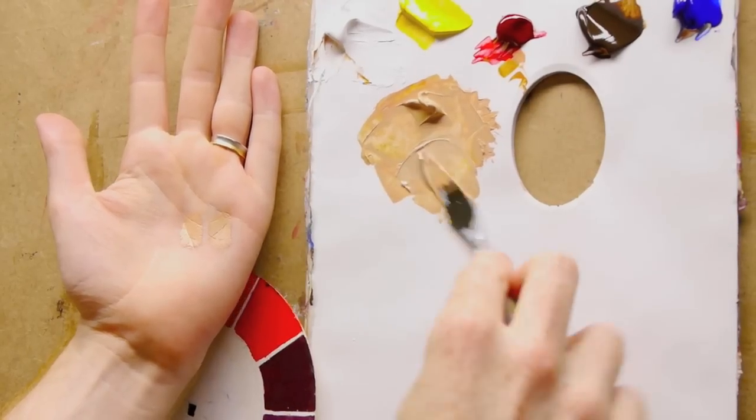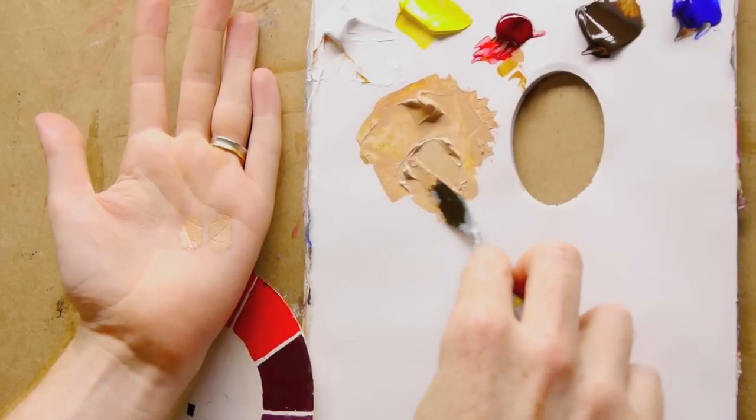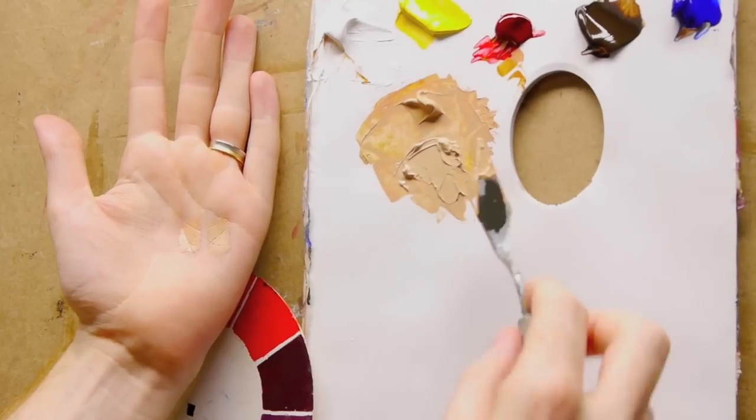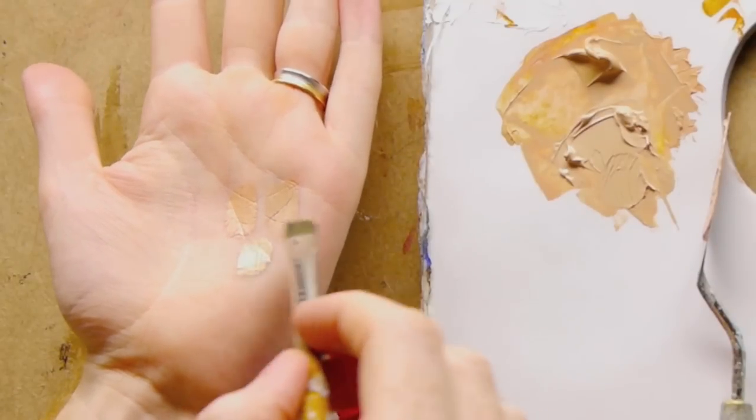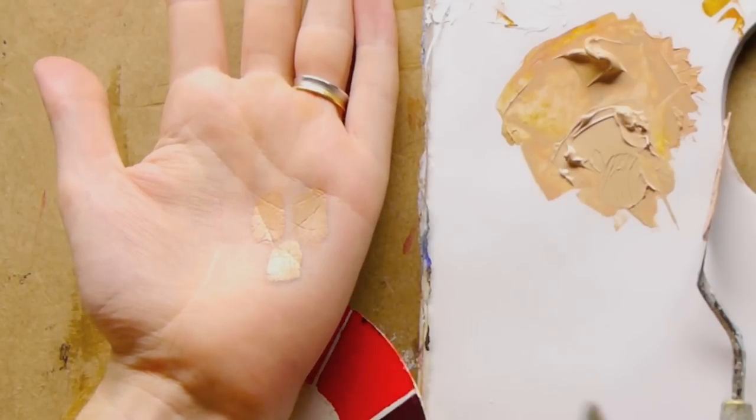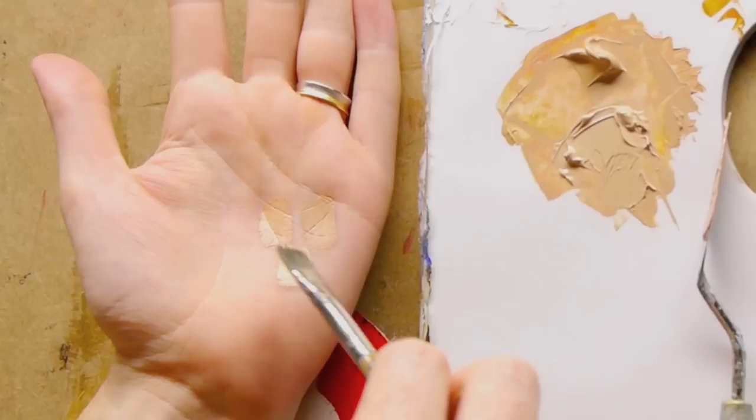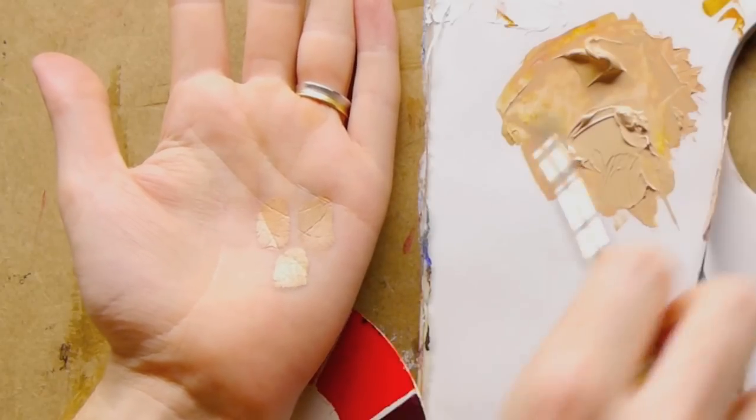You can see how when you add the white to it, it's going to go a bit too pale, a bit too green. Let's have a look. Way too bright, so we'll add a bit of the red to it.